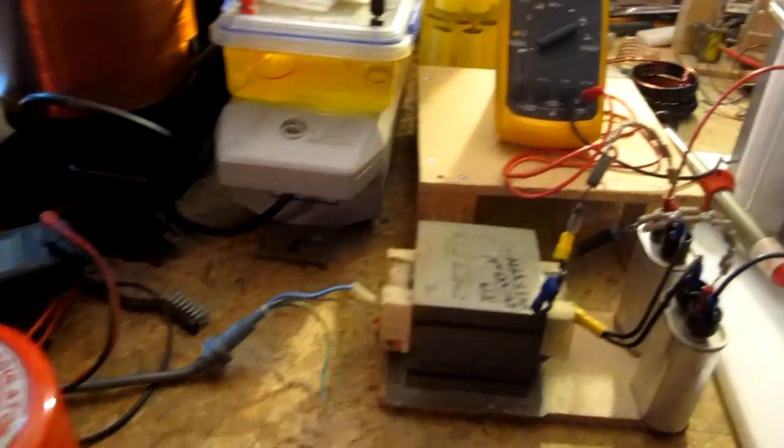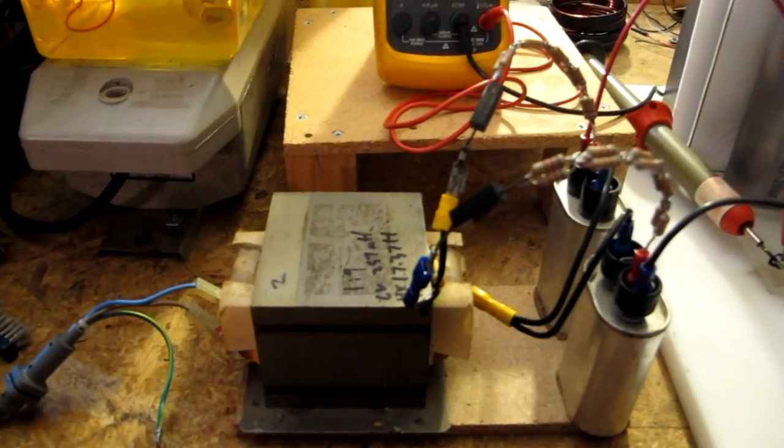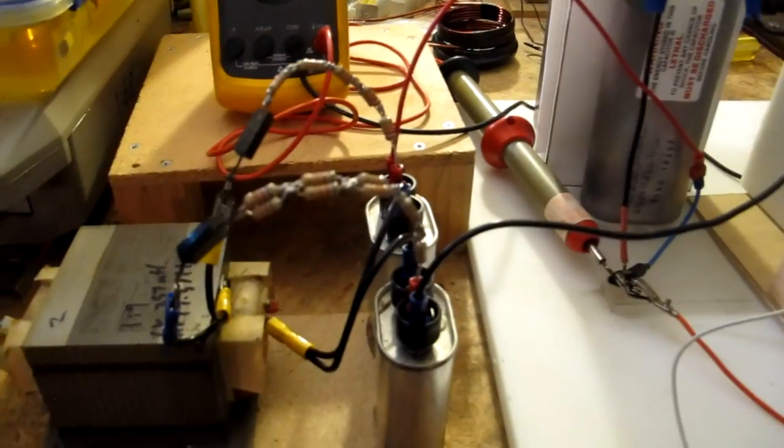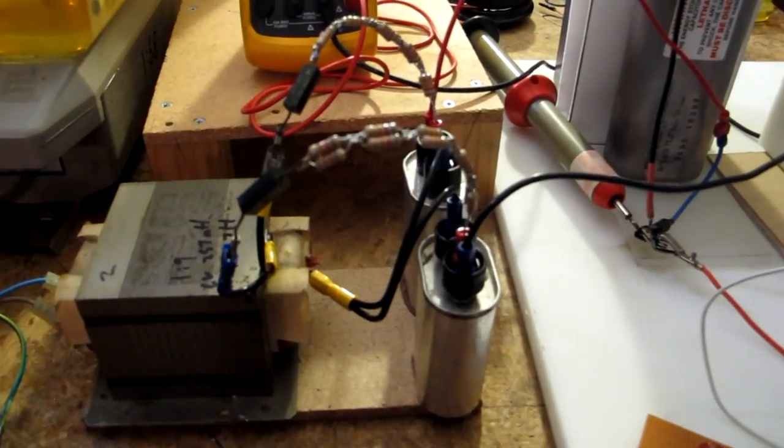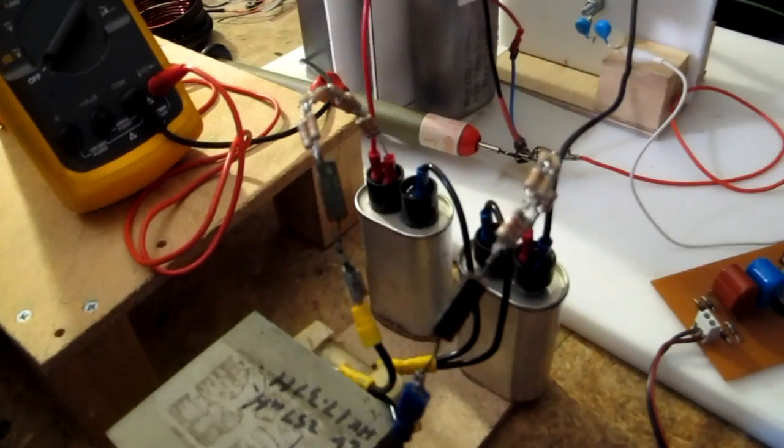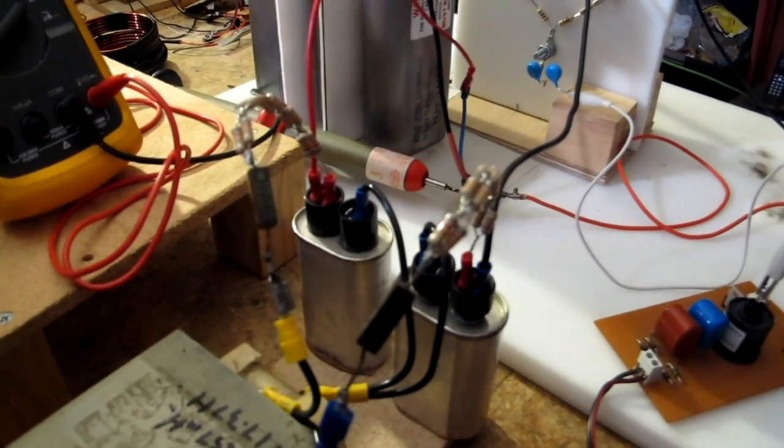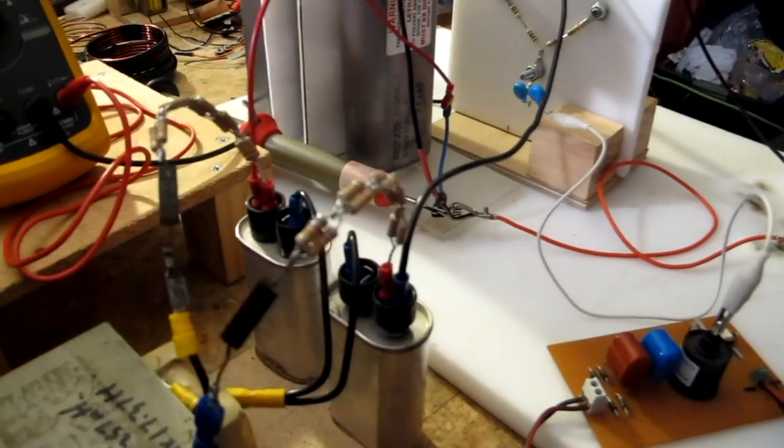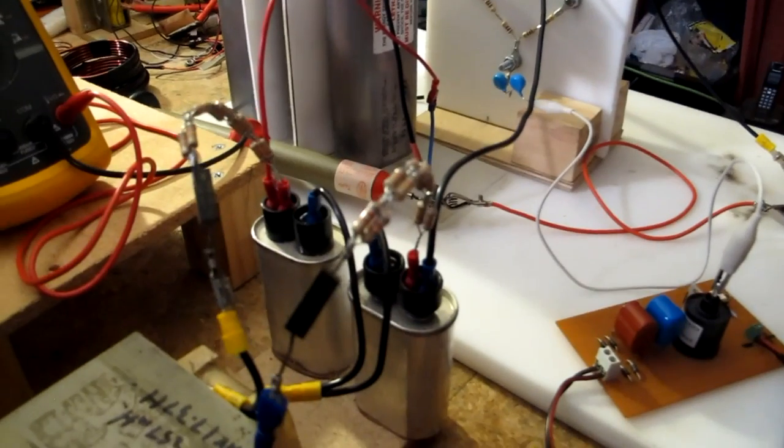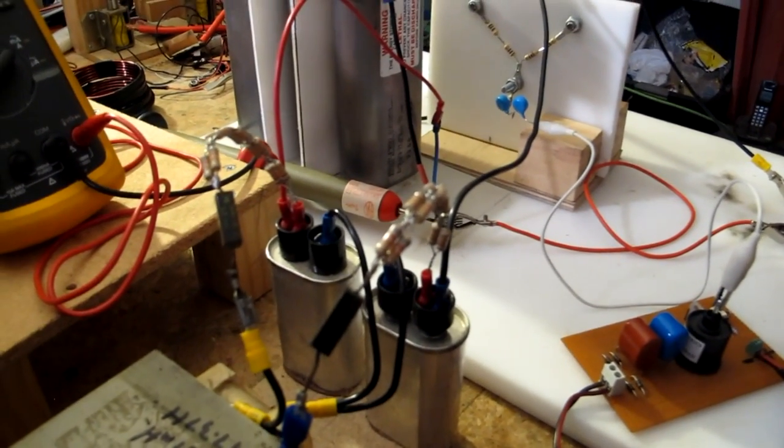That is going into a microwave oven transformer which normally puts out about 2100 volts. And then we have a doubler arrangement here using the diodes out of two microwave ovens and two capacitors which are matched as close as I could for voltage and capacity.